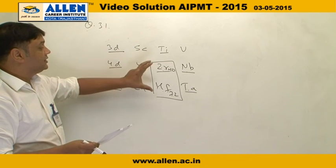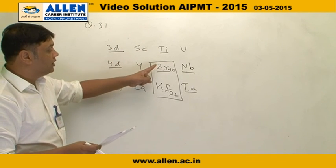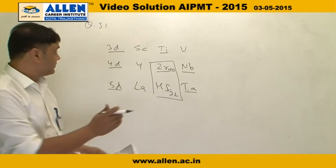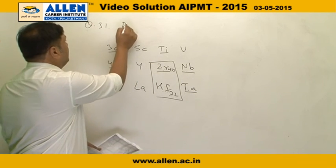The correct answer is the one in which the sizes of zirconium and hafnium are nearly equal. Therefore, the answer is second. Question 31, answer is second.